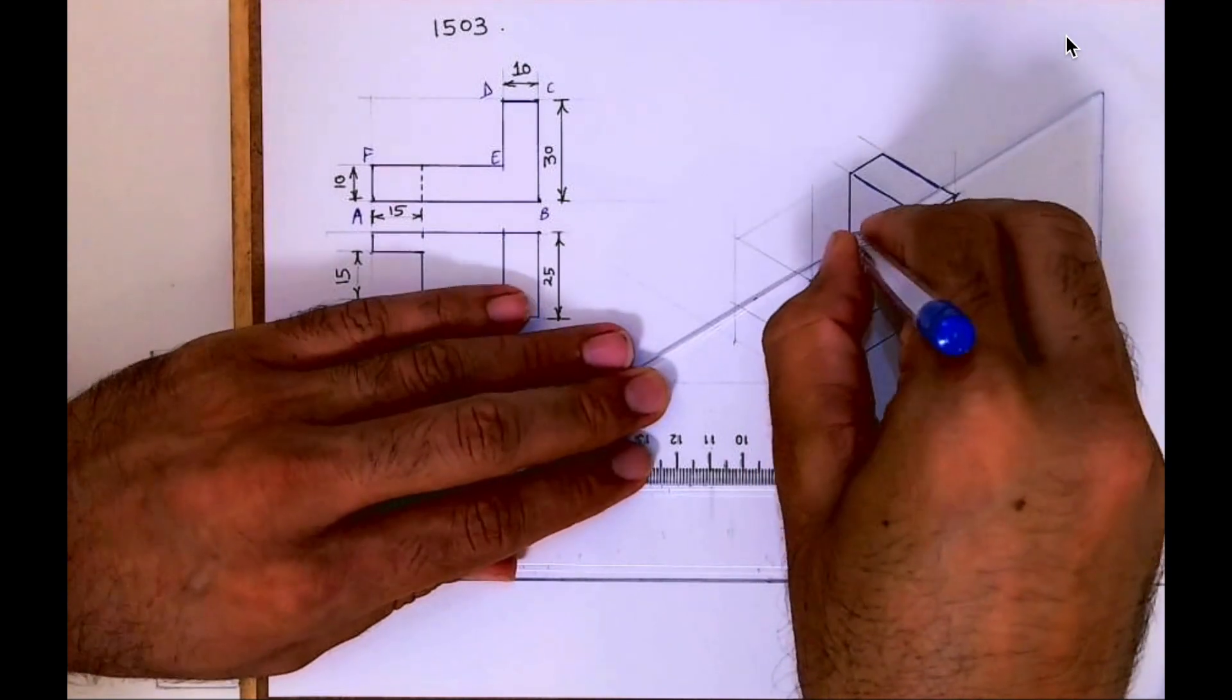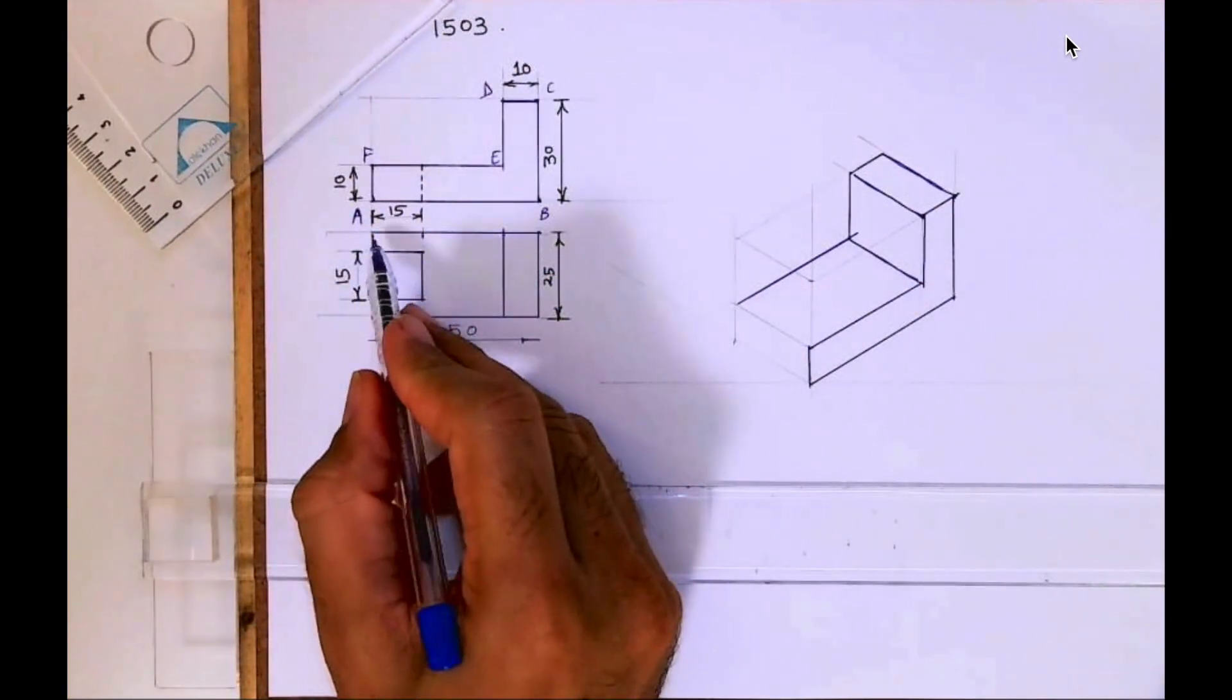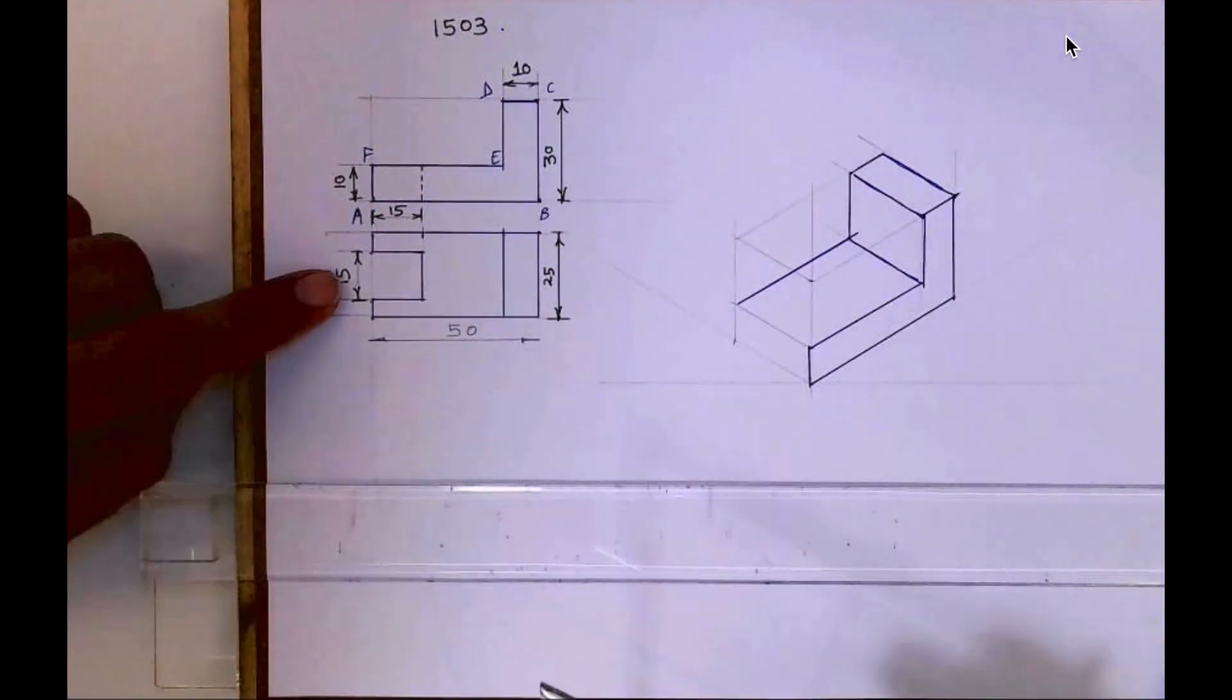And you draw a line like this. Whatever is in the front, the same thing is behind. With that concept we have done. Now we have to draw this part, the slot.